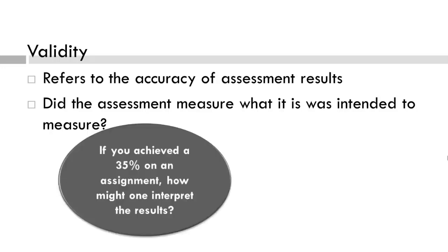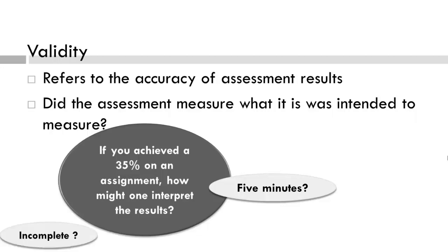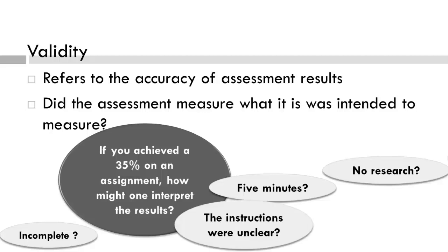Let's look at this example. Say you achieved 35% on an assignment. How do we interpret this? Why did this happen? There could be many reasons. Maybe the student only spent 5 minutes completing the assignment and it was really incomplete. Or maybe the student spent a good amount of time on the assignment but did not conduct any research to support his or her arguments. Perhaps the assignment was unclear, or there were no learning objectives listed on the assignment.